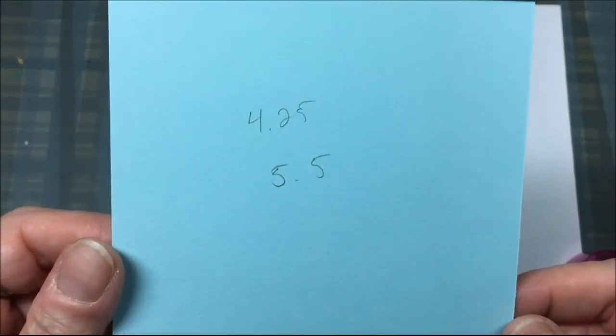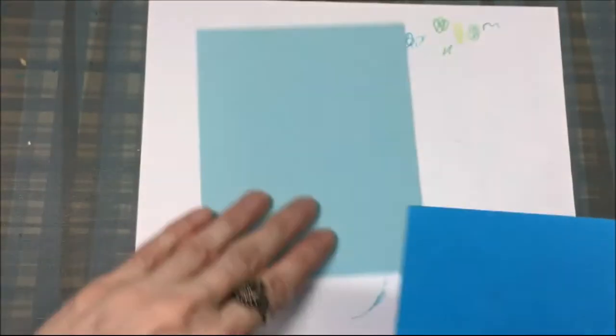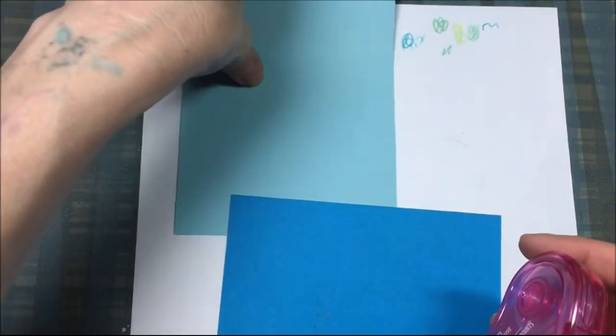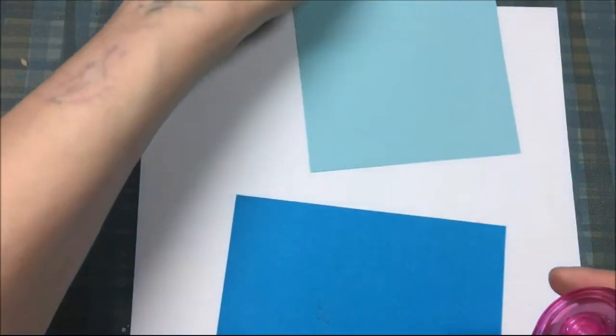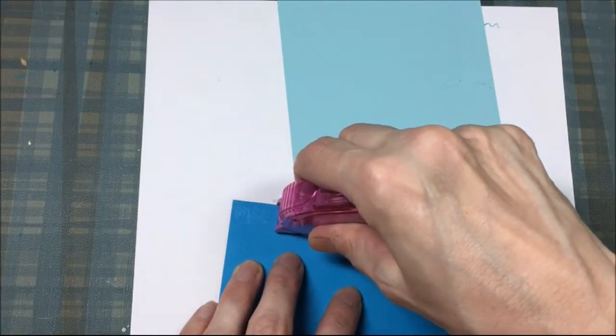This is a piece of light blue cardstock and it's cut four and a quarter by five and a half and this is a darker blue and it's cut four inches by five and a quarter and I'm just going to layer those on top of each other with my dry adhesive.